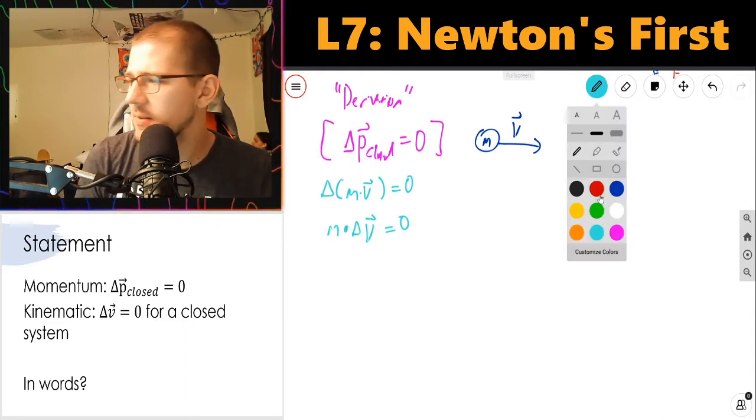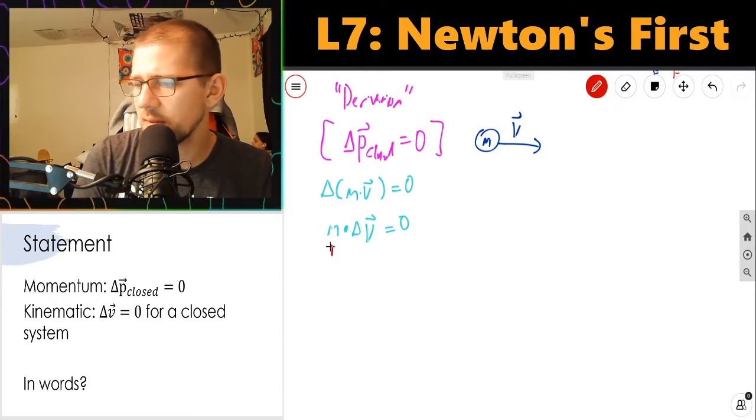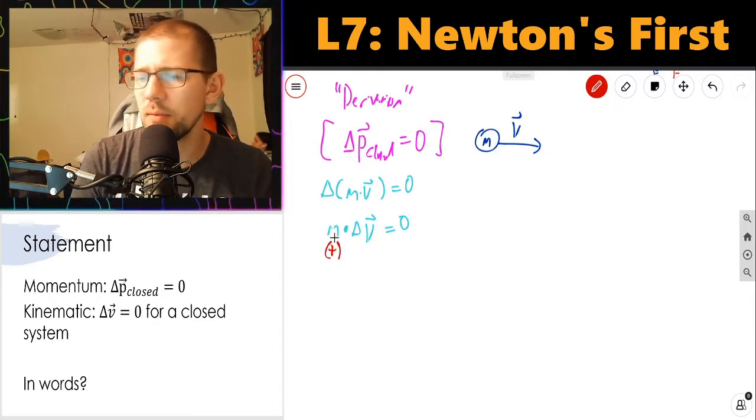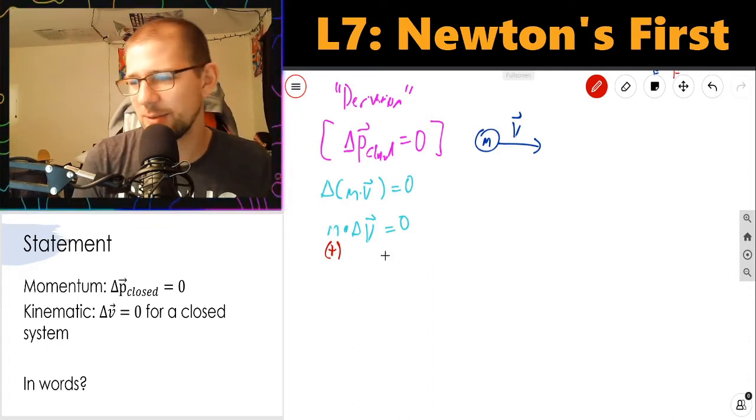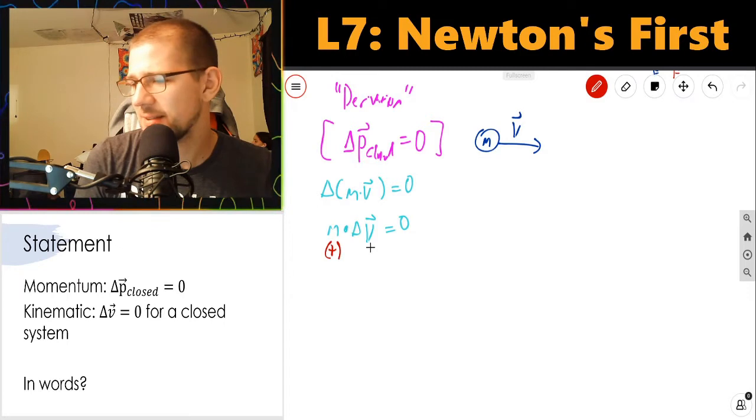Now I notice that mass is always a positive number. There's no such thing as negative mass. Again, don't talk to the particle people. So mass is always positive as far as we're concerned.